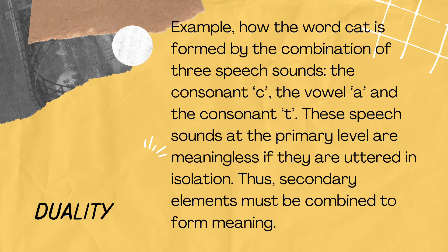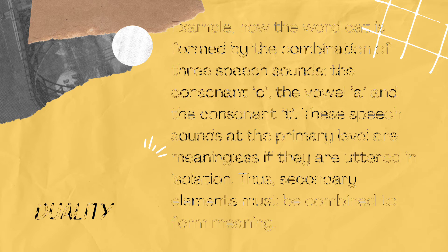Duality: for example, the word 'cat' is formed by the combination of three speech sounds — the consonant C, the vowel A, and the consonant T. These speech sounds at the primary level are meaningless if they are uttered in isolation. The secondary elements must be combined to form meaning.